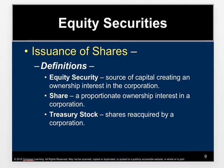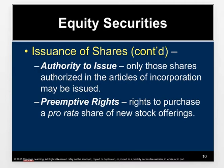There's also something called treasury stock, which are shares reacquired by a corporation. This happens quite a bit — especially with publicly traded companies, which go into the markets to buy back or reacquire some of their own shares. When those shares are held by the corporation itself, we call them treasury stock. As for the authority to issue shares, only those shares authorized in the articles of incorporation may be issued. The articles of incorporation specify the exact amount of shares the company is allowed to issue.